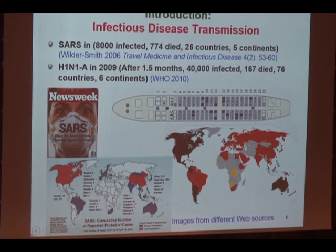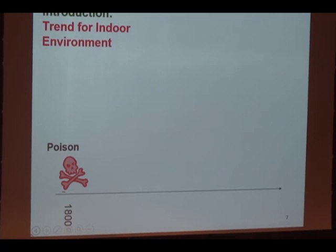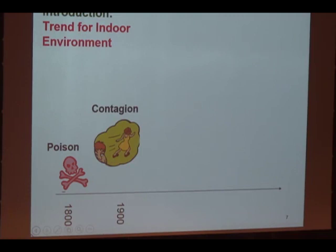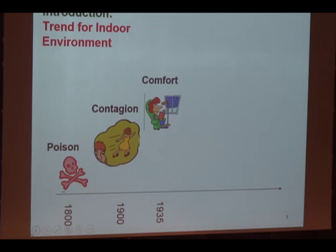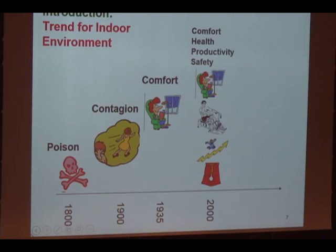Indoor environment design is not new to us. In 1800, there was a poison problem — that's why it started with ventilation. In 1900, there was a contagious disease, another H1N1 problem, and in 1905 the so-called Spanish flu killed about 50 million people. When we look at air conditioning in the last century, people were initially afraid of it. Now, of course, we have to rely on air conditioning. We look at indoor air quality, health, and productivity.